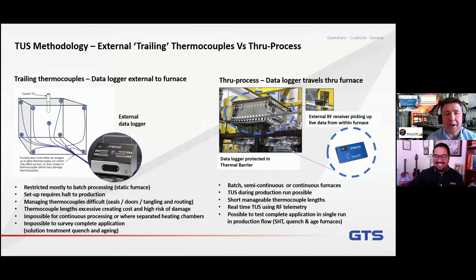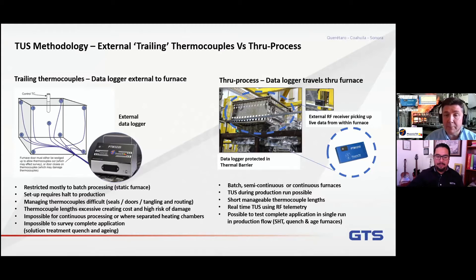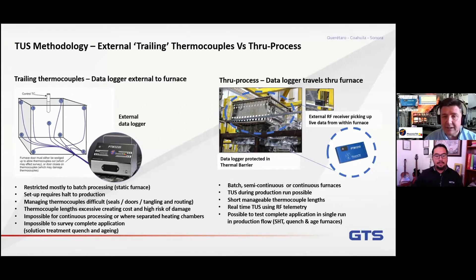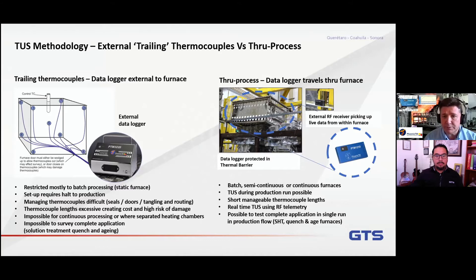The traditional way of doing a survey is generally with an external data logger outside of the furnace. Particularly if it's a batch process, that's probably the most economic and efficient way of doing it, and it's been the methodology applied for many years. But in some unique situations, particularly where there's product movement — such as the aluminum solution heat treatment, generally a semi-continuous or continuous process — a different approach is needed.